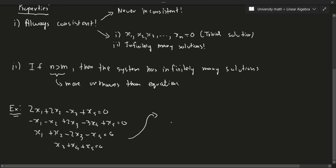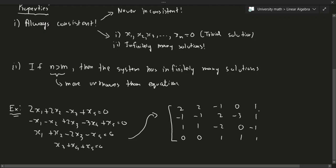Putting this into an augmented matrix, we get the following rows: [2, 2, −1, 0, 1 | 0]; [−1, −1, 2, −3, 1 | 0]; and [0, 0, 1, 1, 1 | 0]. The right-hand side of course stays all zeros.